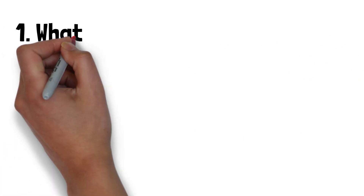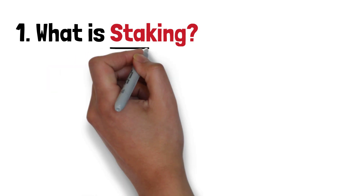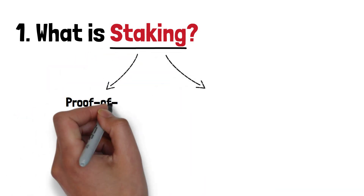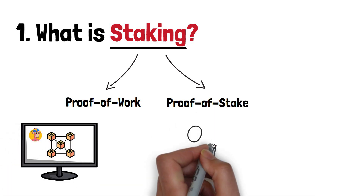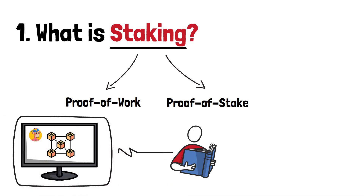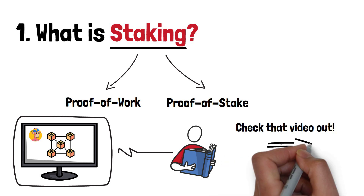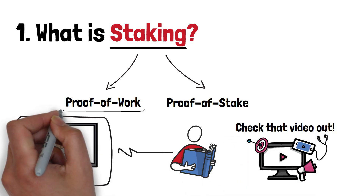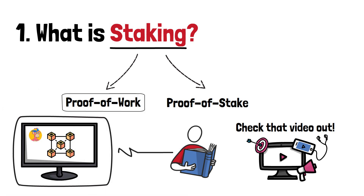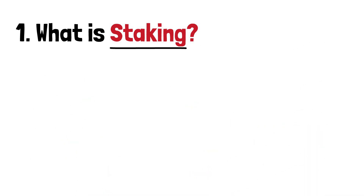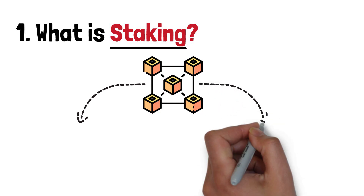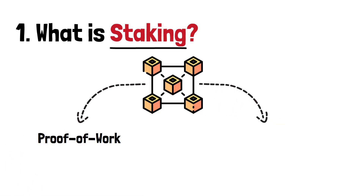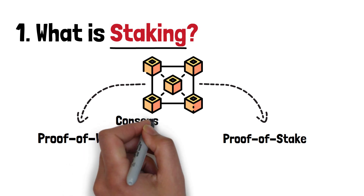So then, what in the world is staking? Well, in order to truly understand staking, you will need to be aware of concepts known as proof of work and proof of stake. I've discussed these terms in a recent video about blockchains. If you'd like to learn more about it and understand the topic in depth, I'd highly advise you to go check that video out, and then come back and watch this one. Furthermore, I probably have a dedicated video on proof of work as well. In the world of crypto, there are two main ways of how blockchains function. Those ways are called proof of work and proof of stake. Both of these concepts are called consensus algorithms.